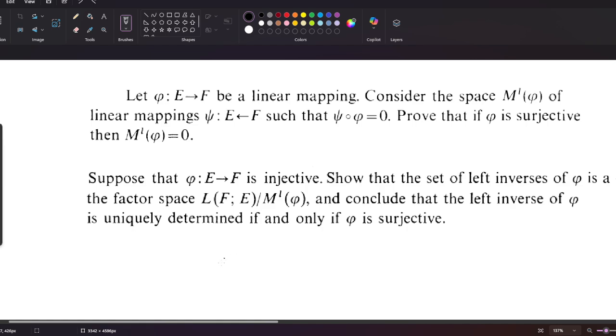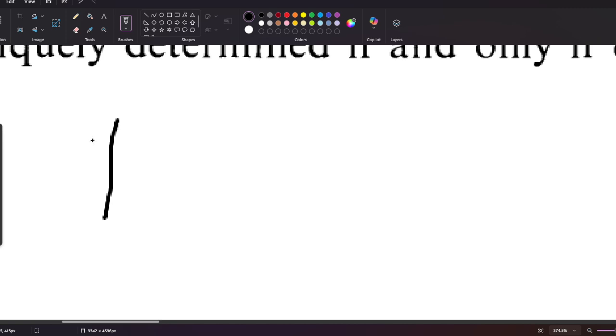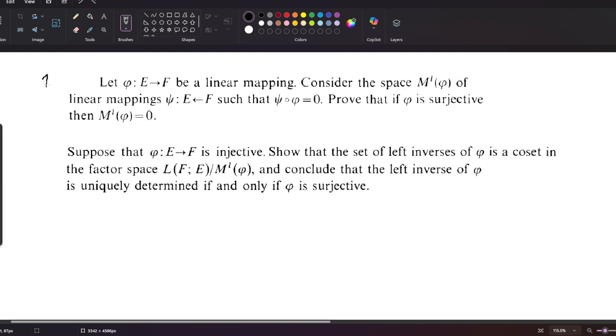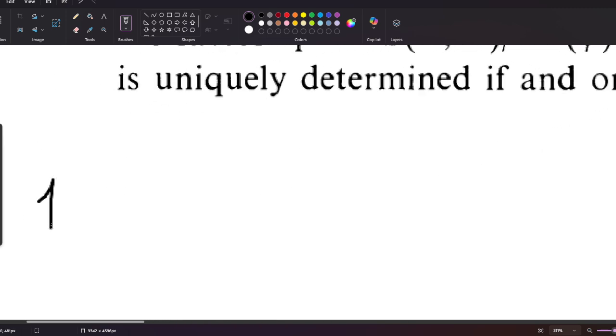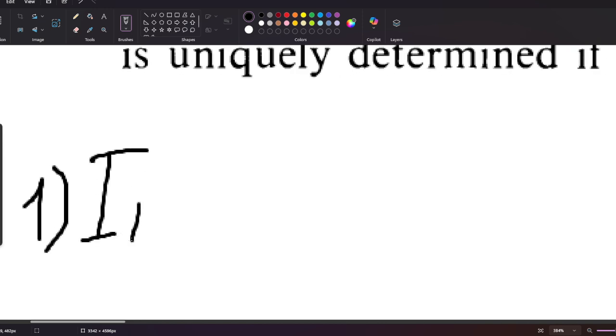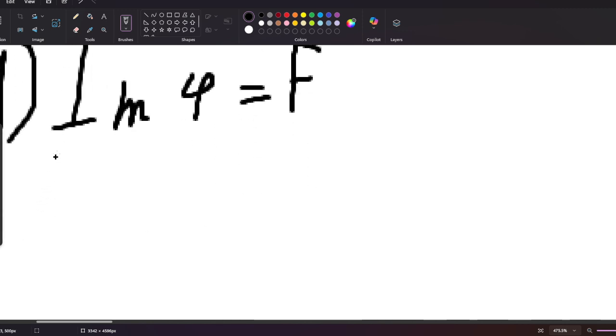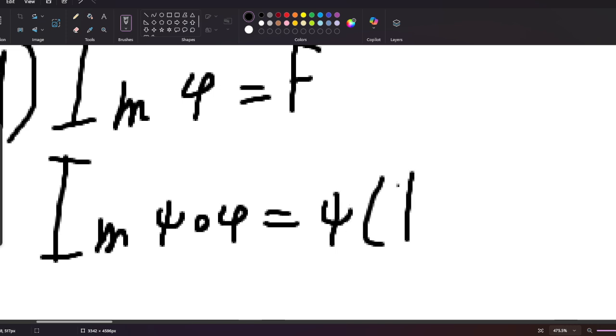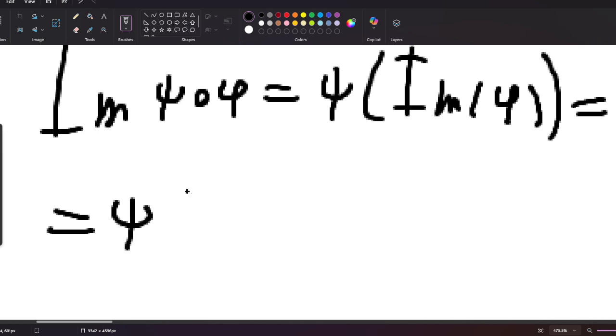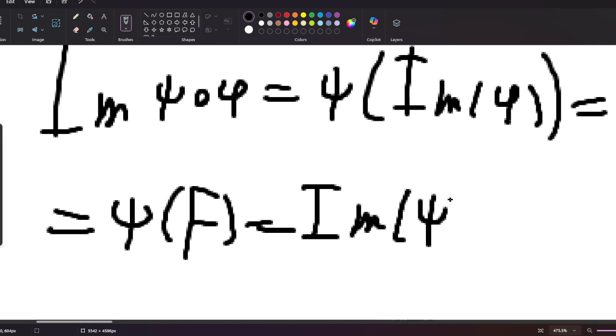If phi is surjective, then the image of phi equals F. Let's work with the image of the composition psi with phi. This is going to be psi of the image of phi, which is psi of F. Since F is the domain, it's just the image of psi.